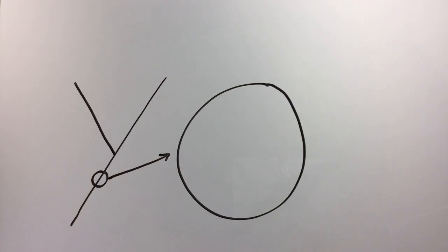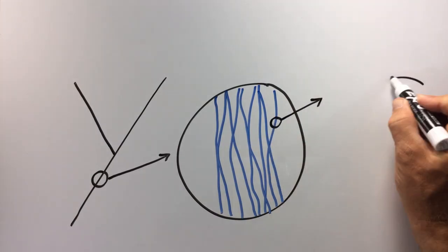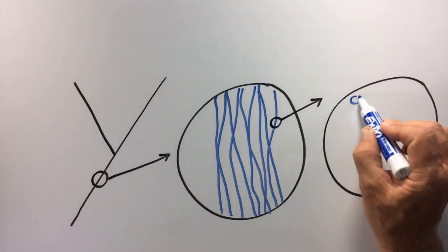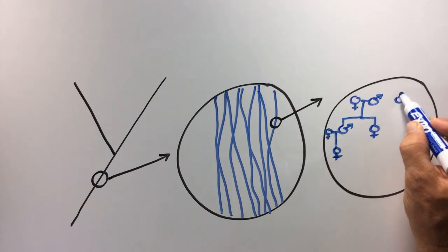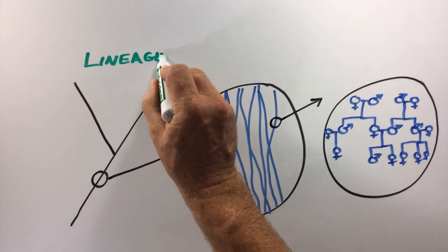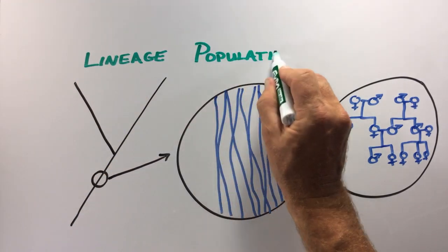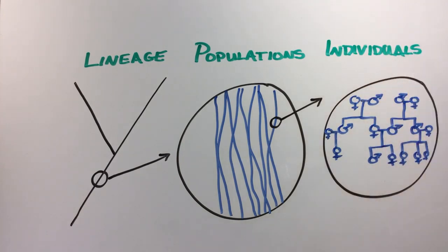Starting with the lineage, we have each branch and it's composed of many different populations which are indicated by these blue lines. Populations exist independently from one another, but they are genetically united by movement of individuals among them, a process called gene flow. Inside each of these populations are individuals who may reproduce and pass their DNA from ancestors to descendants over time, as is indicated by these pedigrees. And so a lineage is actually a representation of many different populations composed of reproducing individuals over time.